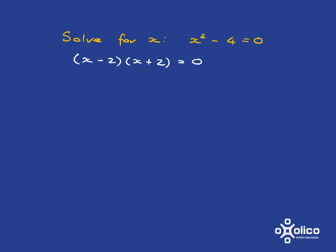And now you've got a product of two things equal to 0. So either this is 0 or that is 0. And so you get x = 2 or x = -2. And that is your solution to the equation.